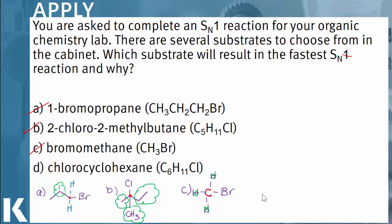Our last substrate is chlorocyclohexane — a six-membered ring with a chlorine atom on one of the carbons. Since the leaving group is attached to the carbon at the top, that is where our carbocation forms. Considering what's attached, there is electron density on either side, making this a secondary carbocation. Secondary carbocations are okay for SN1 substrates, but the more electron density there is, the faster the reaction proceeds. Therefore, our correct answer is answer choice B, 2-chloro-2-methylbutane.